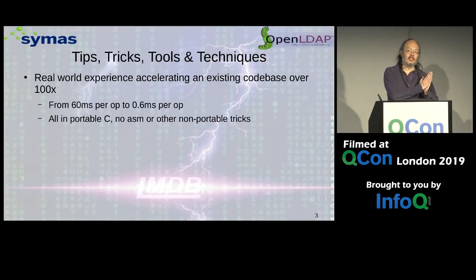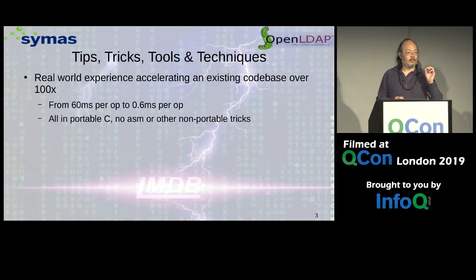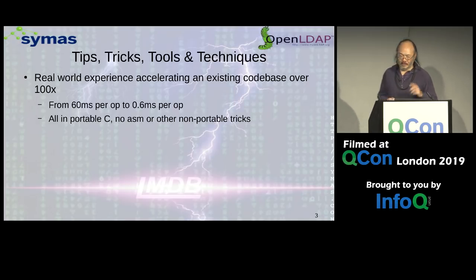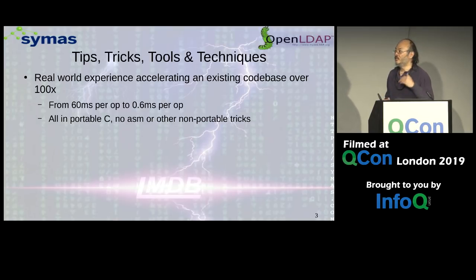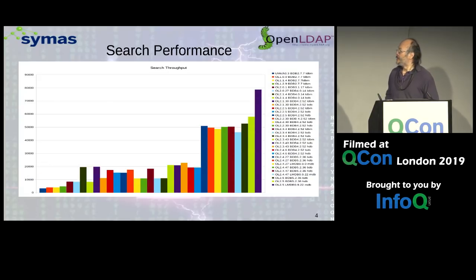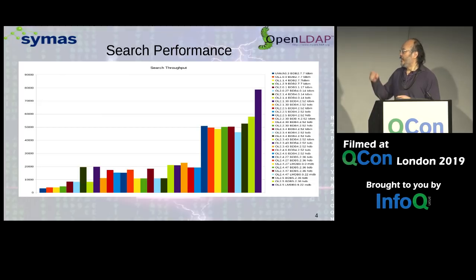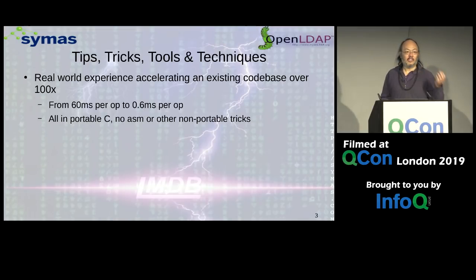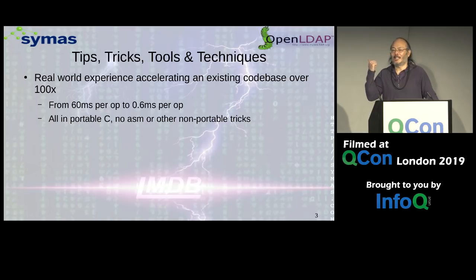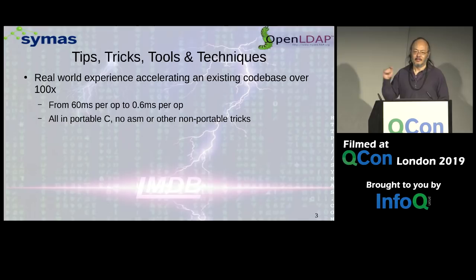This is experience working on the OpenLDAP project for the last almost 20 years. From the very first version of the code to the version that we're running today, it has accelerated by over a factor of 100. This chart shows you where search performance was at the very first version of OpenLDAP on the left and the current version on the right — from 60 milliseconds for a single operation to 0.6 milliseconds. That 0.6 milliseconds also happens to be the ping time on that network, so we're running at network speed.